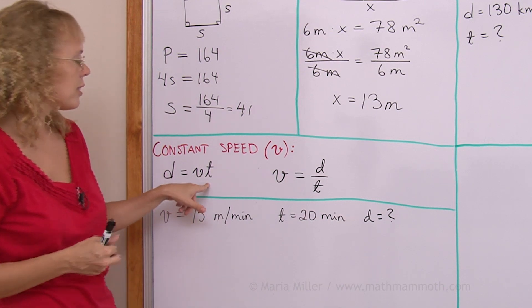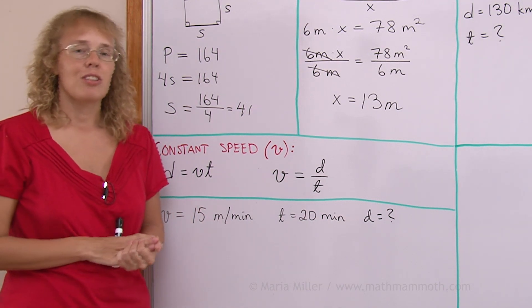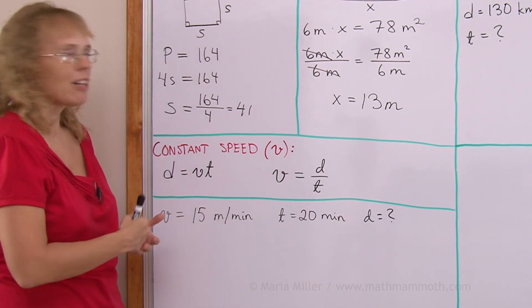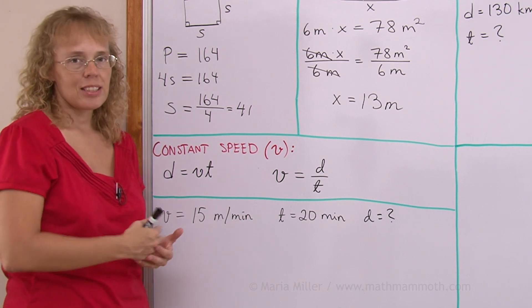D equals V times T is a formula often used. You can use it every time there's a situation involving constant speed, distance and time.